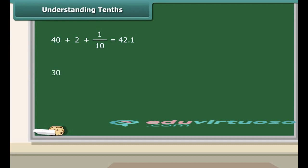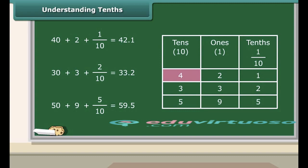Consider another example. 30 plus 3 plus 2 tenths will be 33.2. 50 plus 9 plus 5 tenths will be 59.5. Let us read these numbers from the table. 4 tens and 2 ones and 1 tenth make 42.1. 3 tens and 3 ones and 2 tenths make 33.2. Similarly, 5 tens and 9 ones and 5 tenths make 59.5.